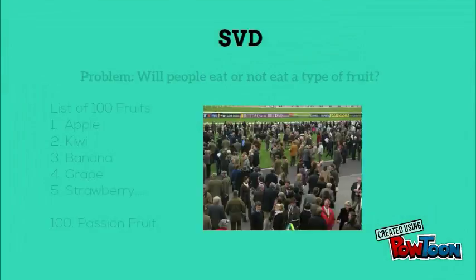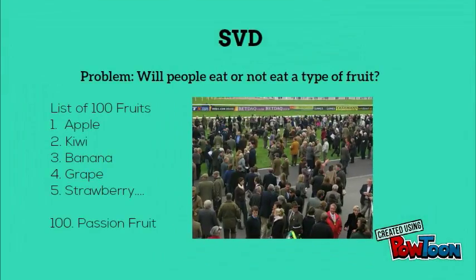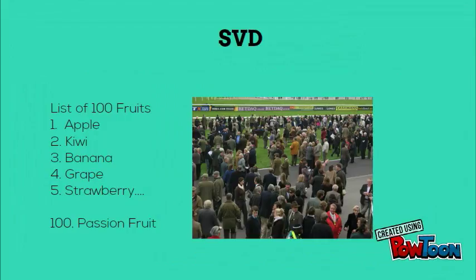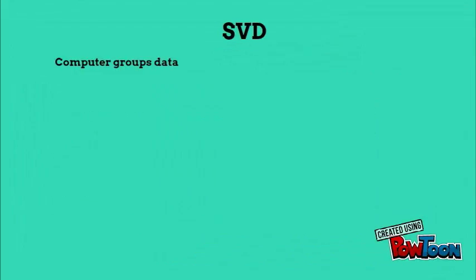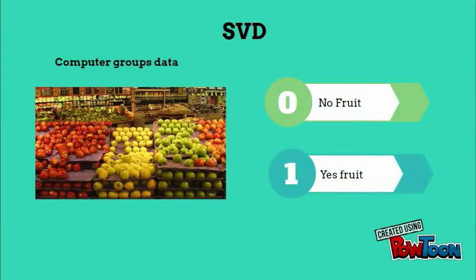Now let's look at an example. We have a list of 100 fruits that 1000 people choose to eat or not eat. We're trying to figure out whether people will eat or not eat a type of fruit in the future. Since machine learning processes numbers, the computer converts a person's eating or not eating a type of fruit as either a 0 or a 1.